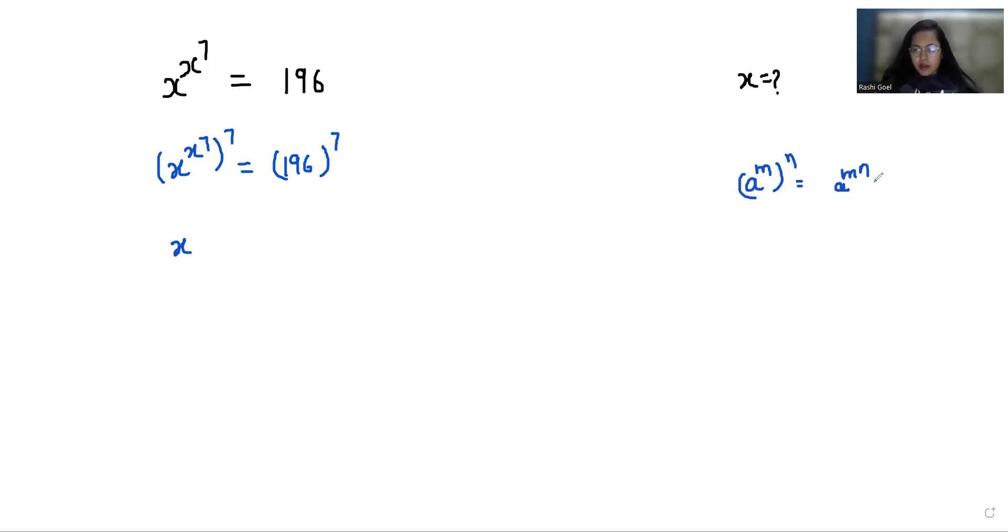So we can write this as x power 7 power x power 7 equals 196. We know that it's a square of 14, so we can write it as 14 power 2.